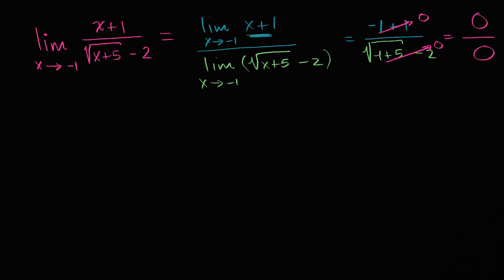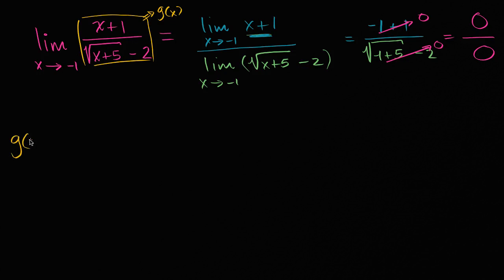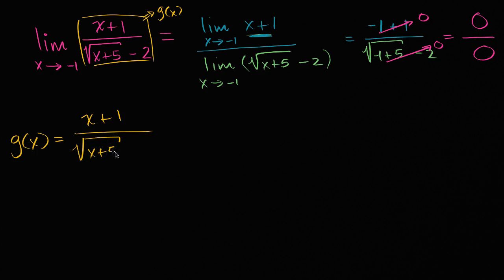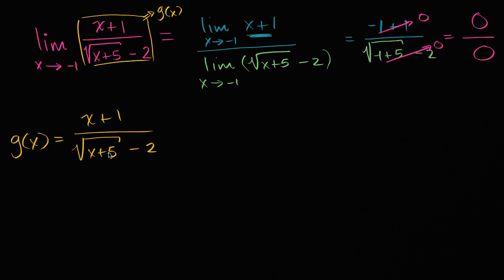The tool we're going to look at is: can we rewrite this expression to evaluate its limit without getting zero over zero? Let's take this expression and call it g of x. So we're trying to find the limit of g of x as x approaches negative one. g of x equals x plus one over the square root of x plus five minus two. The technique we'll use is rationalizing — when you get this indeterminate form with a square root in the denominator, we try to get rid of that square root. This is called rationalizing the denominator.